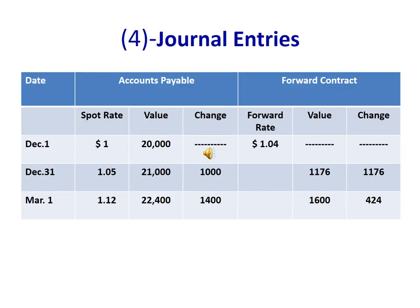First, we need to calculate accounts payable in dollars for our three dates: December 1st, the end of the year, and March 1st. On December 1st, the accounts payable was $20,000, increased by the end of the year to $21,000, and increased on March 1st to $22,400, which means the exchange rate changed in an unfavorable way.